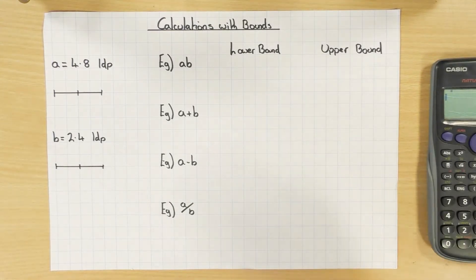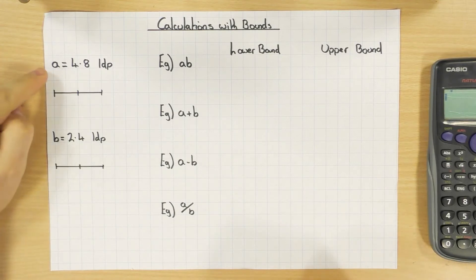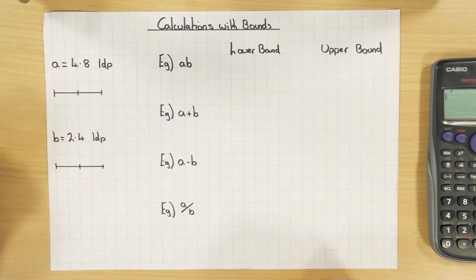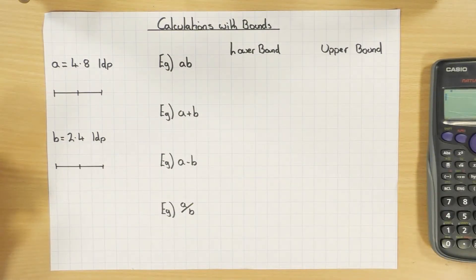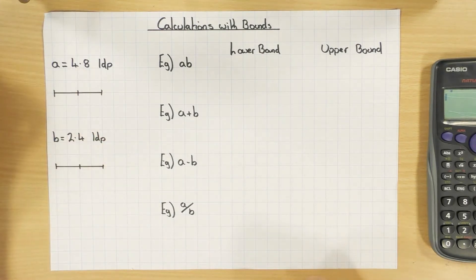In this video we're going to look at how we do calculations using upper and lower bounds. The first thing you'll probably be given in the exam is something like this: a is represented by 4.8 and it's been rounded to one decimal place. The first thing you need to do is work out the upper and lower bound of that value.